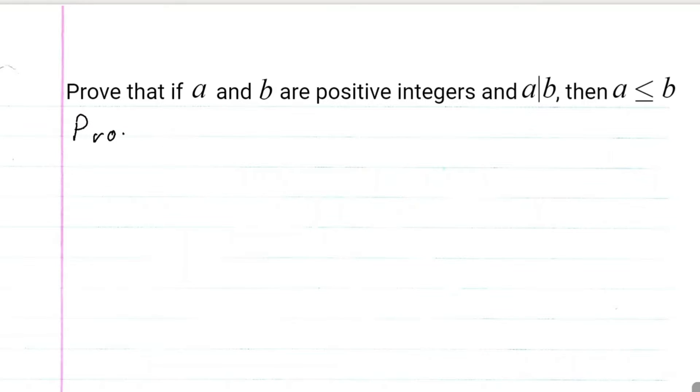So, proof. First we know that A and B are positive integers, so that means we can write A and B are contained in the natural numbers.